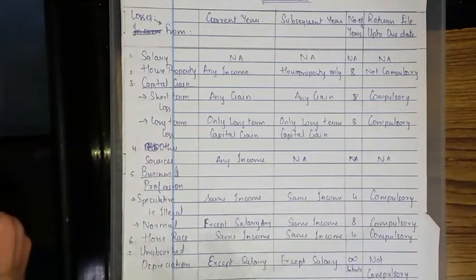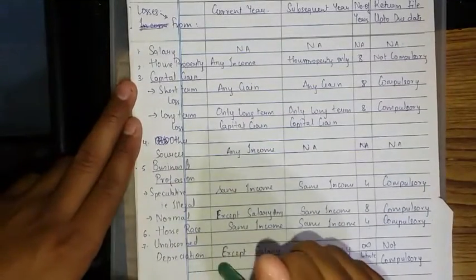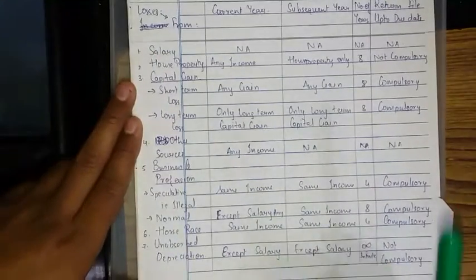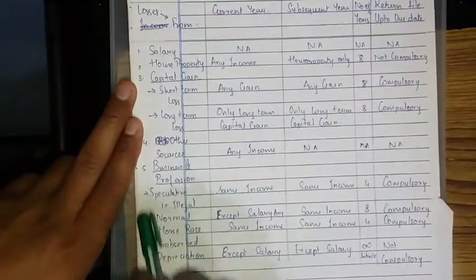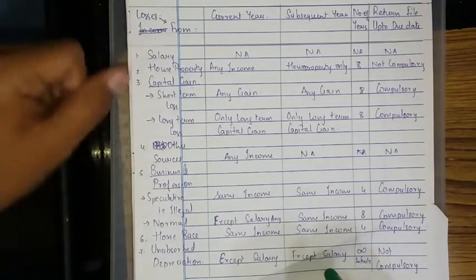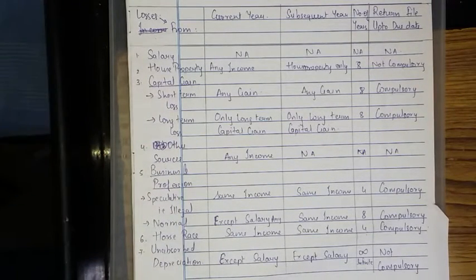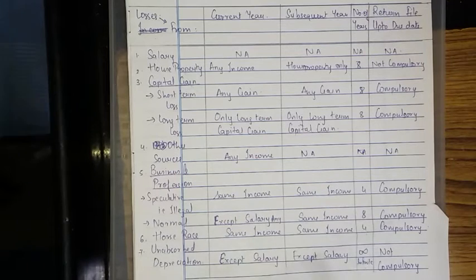I hope you have all written this. This is a simple shortcut — the entire chapter is right here. In the study material there are more than 20 pages on this topic, and I have consolidated all of it into half a page. Now the entire set off and carry forward is in your brain. When such a question comes in the exam, just recall this chart and the entire sum will go right. If you don't follow this, there is a possibility the sum may go wrong. Please copy this and enjoy. Thank you.